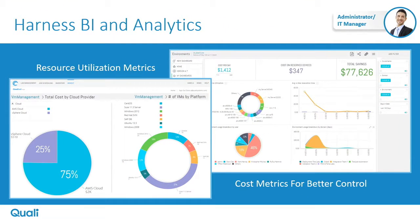Since we're activity-based - you spin up an environment for an activity - we can give a lot of knowledge that is not just at the infrastructure level. We don't just tell you how many VMs were spawned, which isn't very useful, but we can tell you what was the cloud consumption for a specific type of activity in Cloud Shell, what was the resource utilization for a specific type of activity, and we can merge those two types of information together.